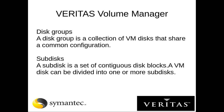We have disk groups and sub disks. A disk group is a collection of VM disks that share a common configuration, so we can have multiple disks utilizing the same configuration. A sub disk is a set of contiguous disk blocks, and a VM disk can be utilized in one or more sub disks.